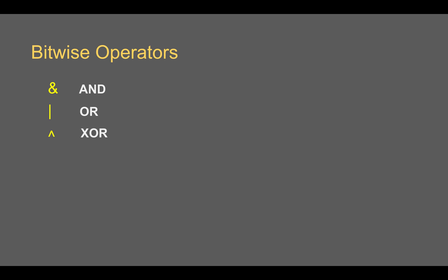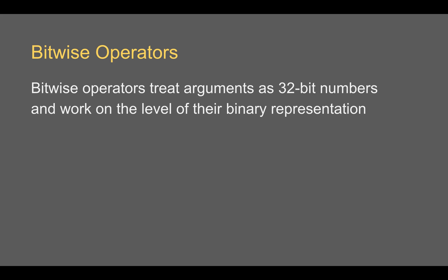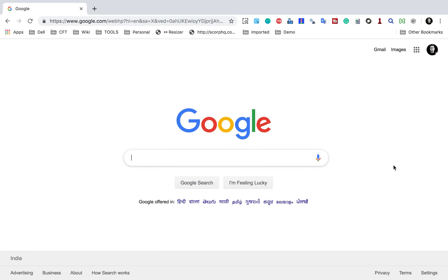We also have XOR, also called exclusive OR. Do not worry if you are not getting it right now — I will explain in a moment. We also have bitwise NOT, bitwise left shift, and bitwise right shift. In JavaScript, these bitwise operators work on the binary format or binary representation of the numbers.